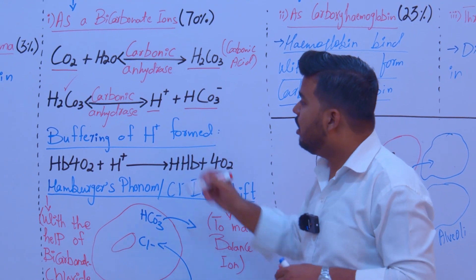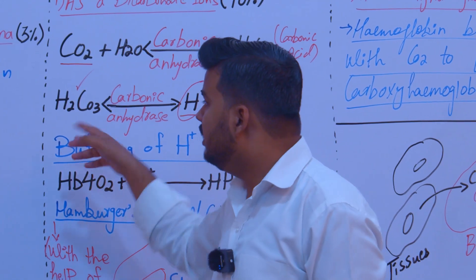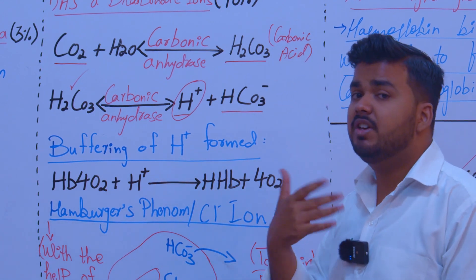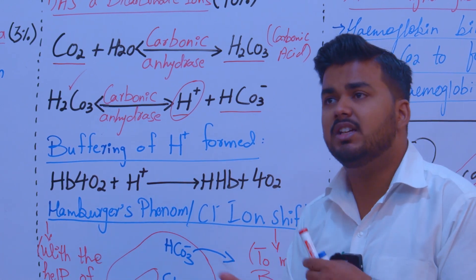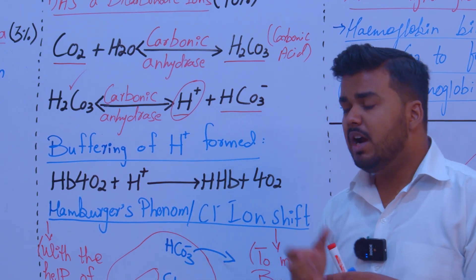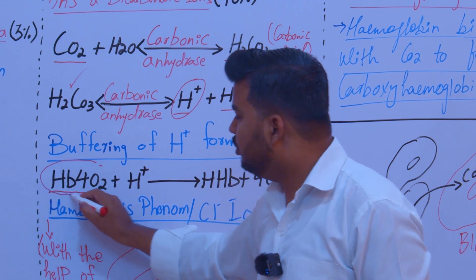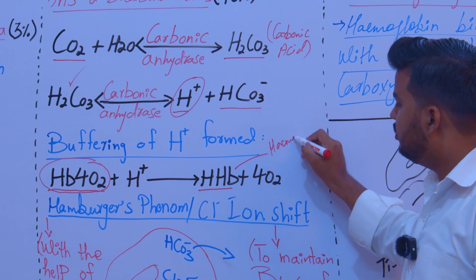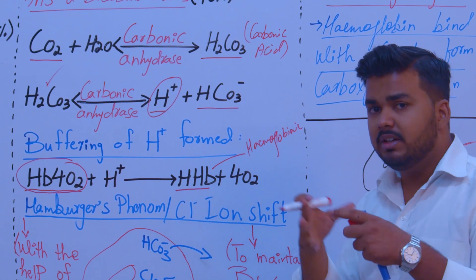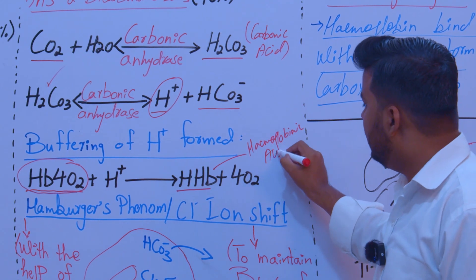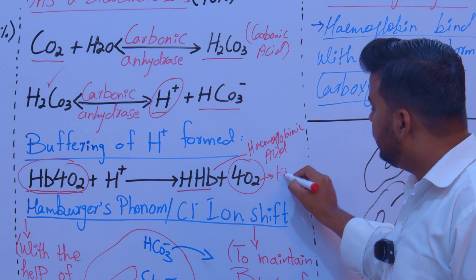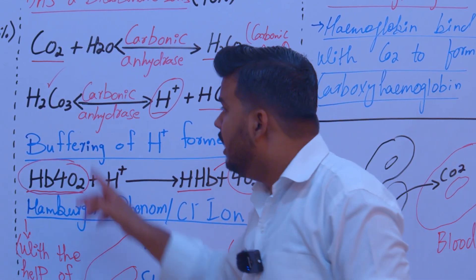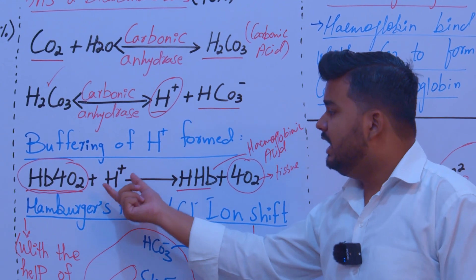The hydrogen ions produced from carbonic acid dissociation could increase and make the blood acidic. To prevent this, the hydrogen ions associate with oxyhemoglobin. The hemoglobin reacts with hydrogen ions and acts as a buffer, releasing oxygen to the tissues and forming hemoglobinic acid.